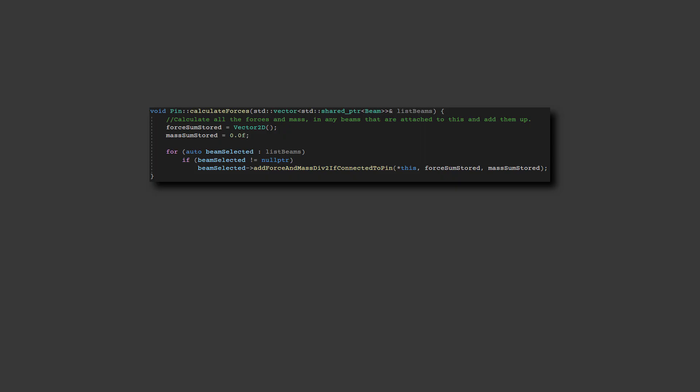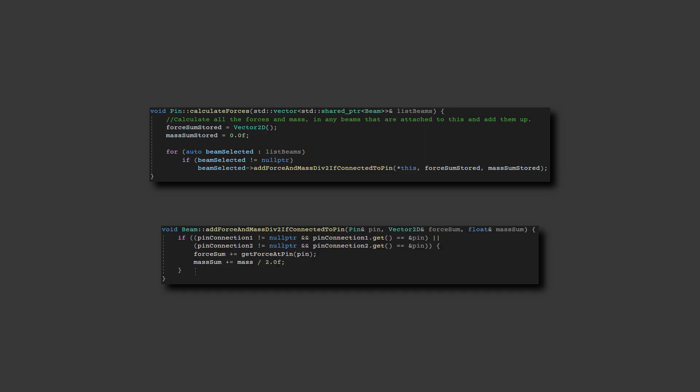The actual code that implements this is pretty straightforward. There's a loop that loops through all the beams in the game. For each beam, a function is called that checks to see if the pin connects to the beam or not. If it does, then the force and mass it exerts on the pin are added to it.